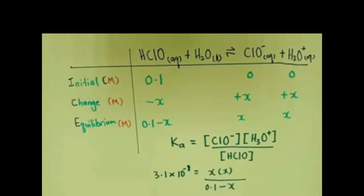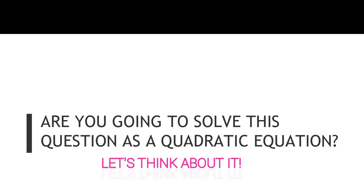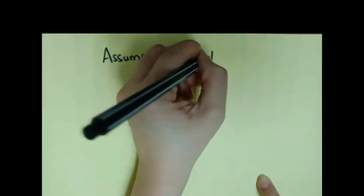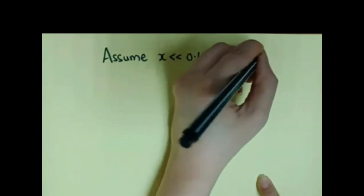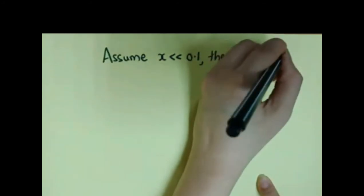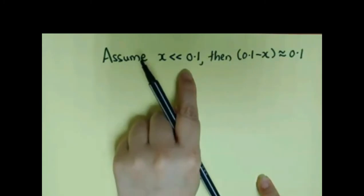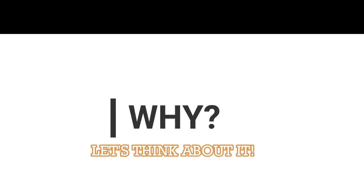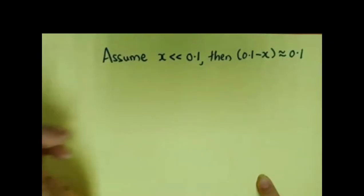Are we going to solve this as a quadratic equation? Let's think about it. Because the value of Ka is very small — less than 10 to the power of negative 5 — we can make an assumption: x is very small compared to 0.1, so (0.1 minus x) simplifies to 0.1.